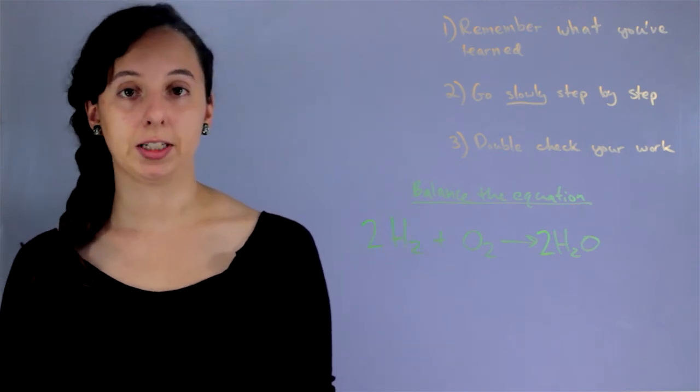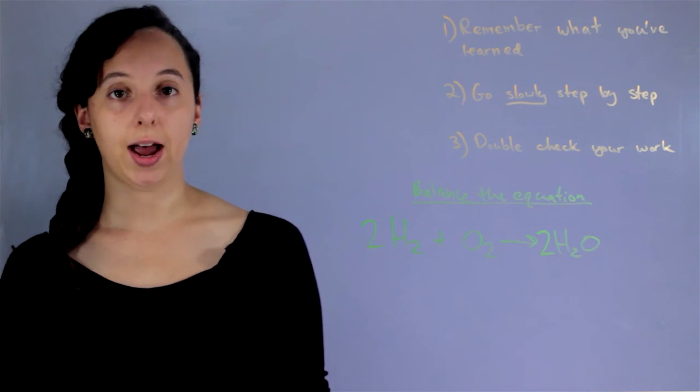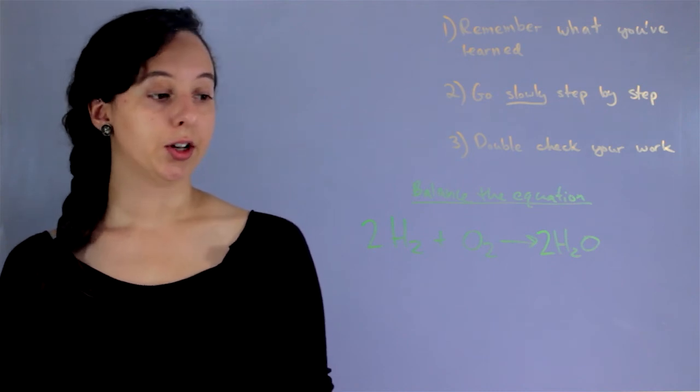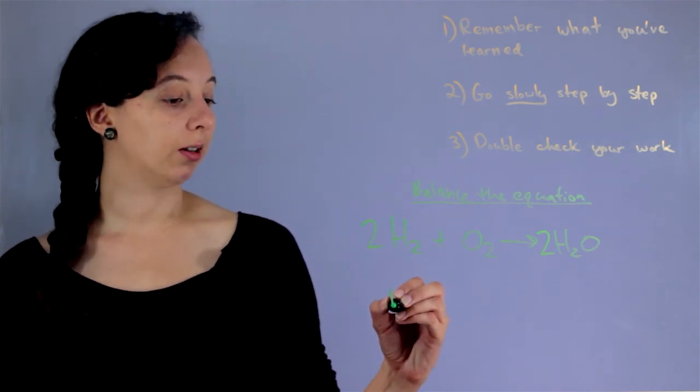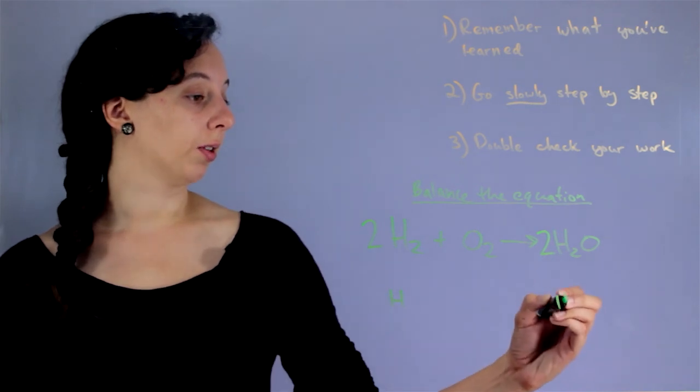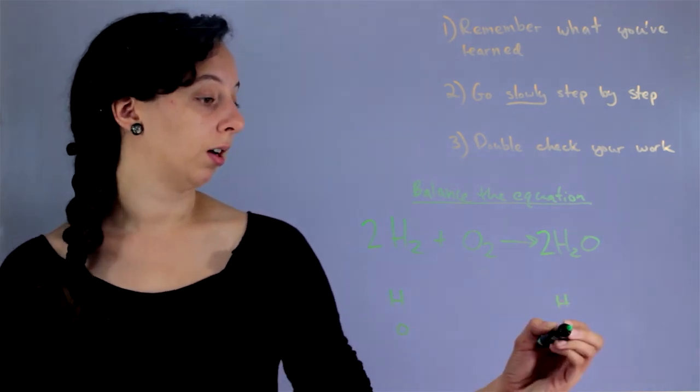So now we're pretty much at step number three. We're ready to double check just to make sure we got everything right. So number of hydrogens on the left, number of hydrogens on the right, oxygen, oxygen.